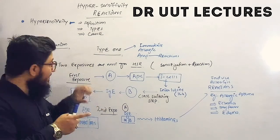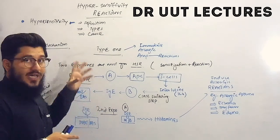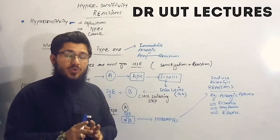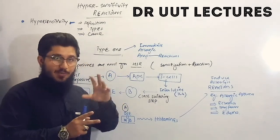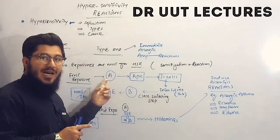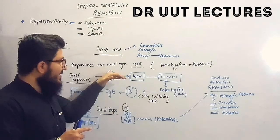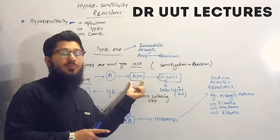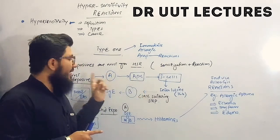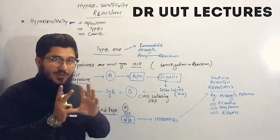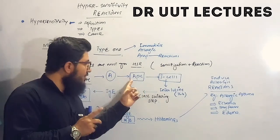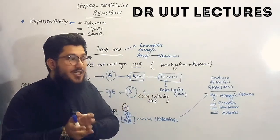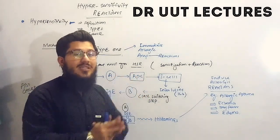In Type 1 reactions, during the first exposure, an antigen — which you can also call an allergen — enters your body. An antigen presenting cell (APC) is waiting for this antigen. As the name suggests, the APC presents the antigen to other cells.